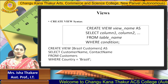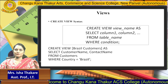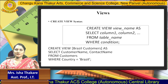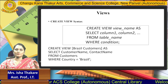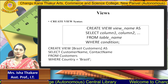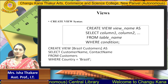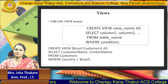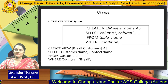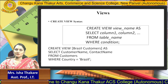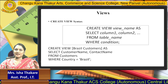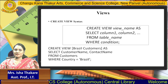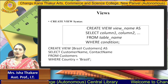The example here is: CREATE VIEW Brazil_customer AS SELECT customer_name, contact_name FROM customers WHERE country = 'Brazil'. So Brazil_customer is the name of the view, and the data in the view is customer_name and contact_name from the customers table, fetching only data for the country Brazil.